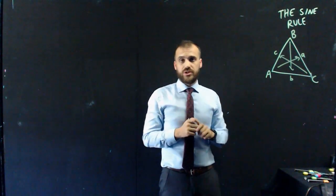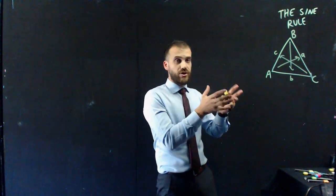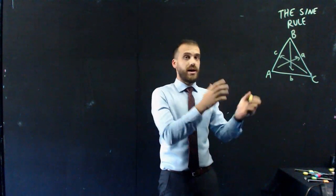This is kind of like with trig ratios, where you say here's the opposite, here's the adjacent, here's the hypotenuse. We're going to have sides A, B, and C, and angles A, B, and C.